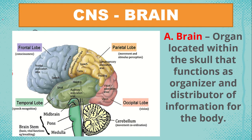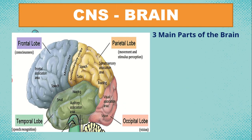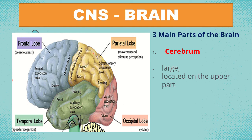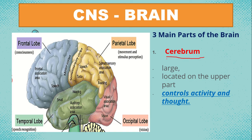Under the brain, we have three main parts. The first part is the cerebrum. The cerebrum is the large part located on the upper part of the brain that controls activity and thought. So the cerebrum controls how we think and the different activities we perform.